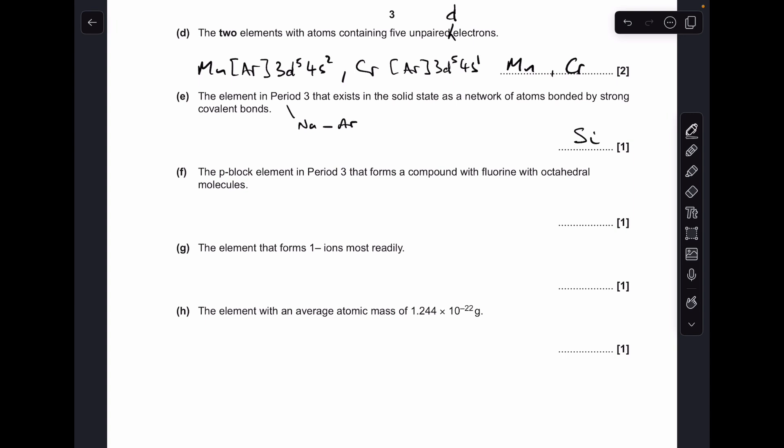Part F, P block, right-hand side of the periodic table, in period 3, that forms a compound with fluorine with octahedral molecules. Well, the answer is sulfur, and the molecule in question is SF6.